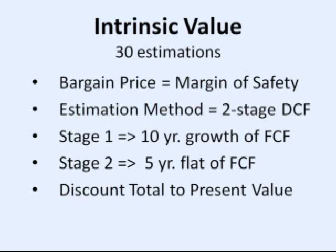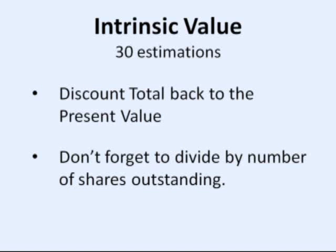Intrinsic value: 30 estimations. Bargain price equals margin of safety. The estimation method used is a two-stage DCF — Discounted Cash Flow method. Stage 1 assumes a 10-year growth of estimated free cash flow. Stage 2 equals 5-year flat growth of FCF. Then discount the total to a present value. Don't forget to divide by the number of shares outstanding.